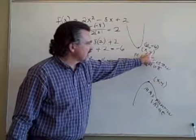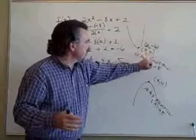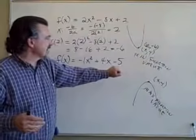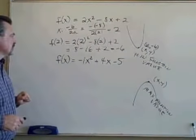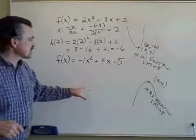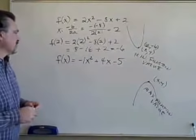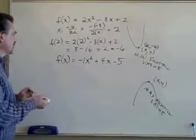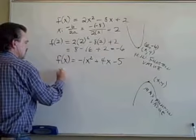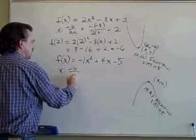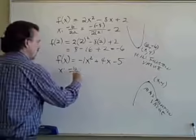So this quadratic function's minimum function value is negative 6, and it occurs where x is 2. That's the vertex. When the coefficient of the squared term is positive, the vertex has the minimum function value — the minimum y value was negative 6, occurring at x equals 2. In this next instance, the vertex will have the maximum function value, so let's find the vertex.